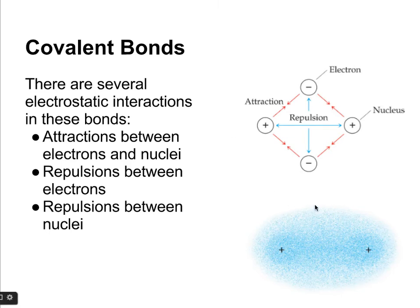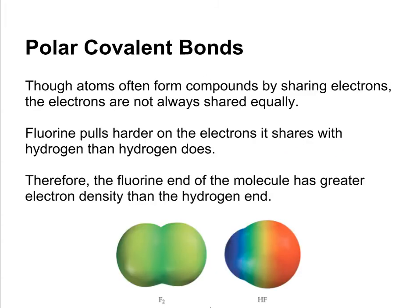And if you look down here, this is just an electron density map of a covalent bond. So the representation that we use, the line between two atoms, is a very simple representation of what's actually going on. There's a lot of forces at work in a covalent bond.